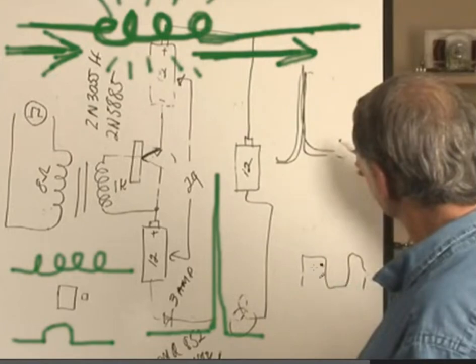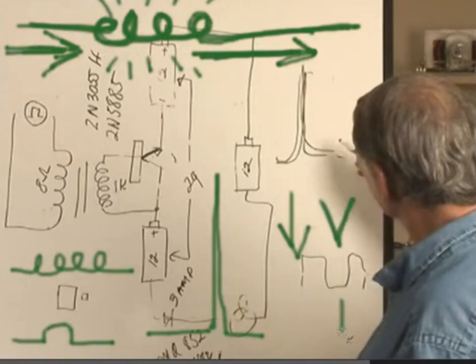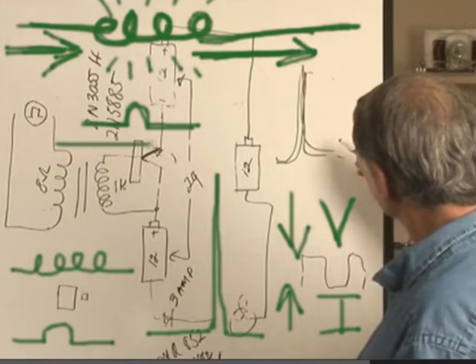Because why does your voltage drop? It drops when you start using power. When you use power, your current goes up. And as the current goes up, the coil's resistance begins to diminish and the coil stops resisting and starts allowing the flow.